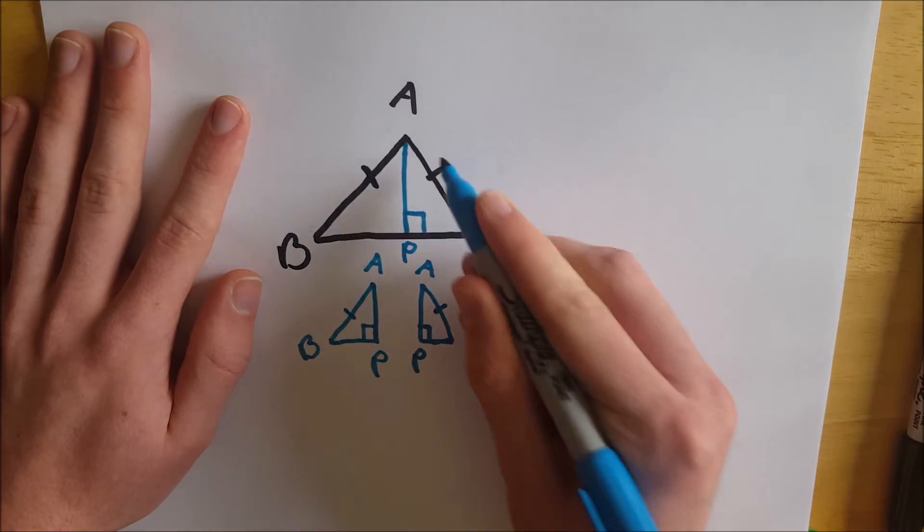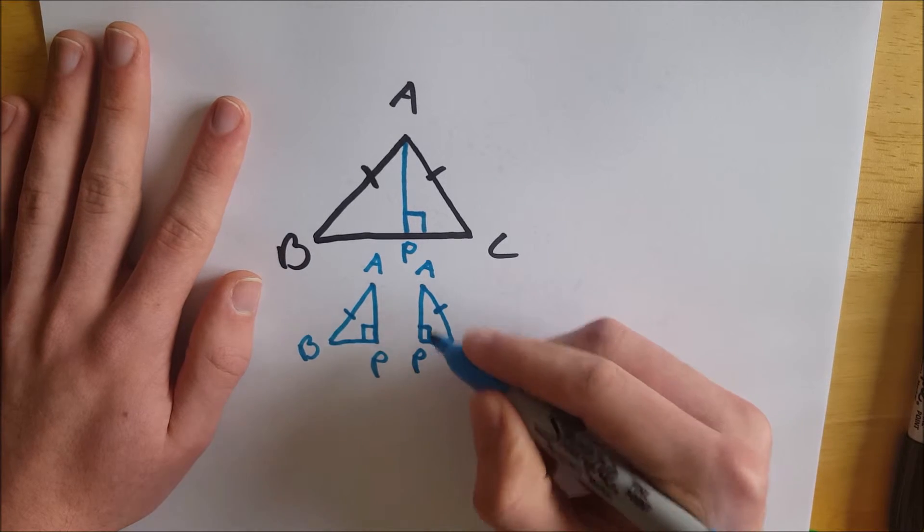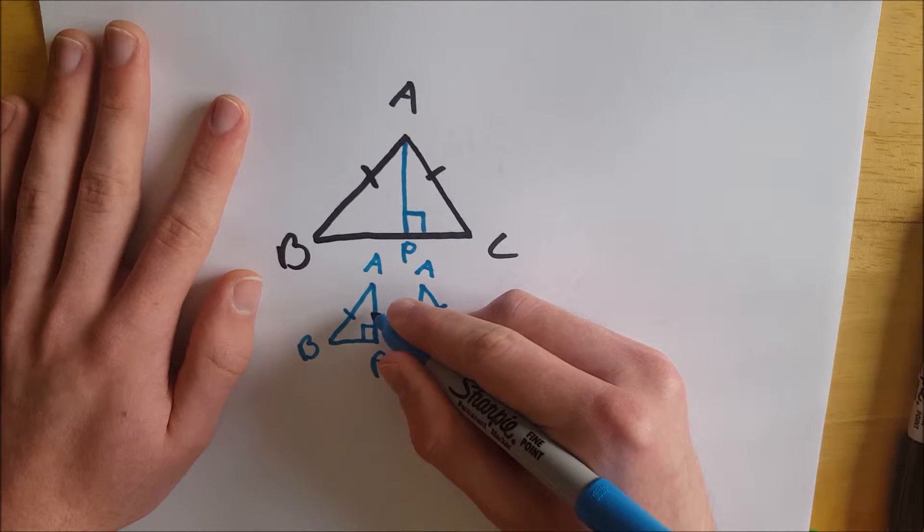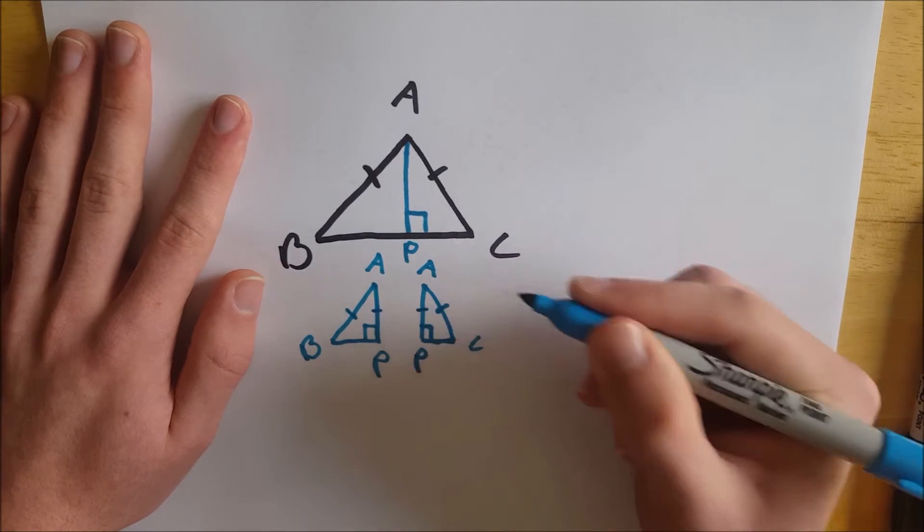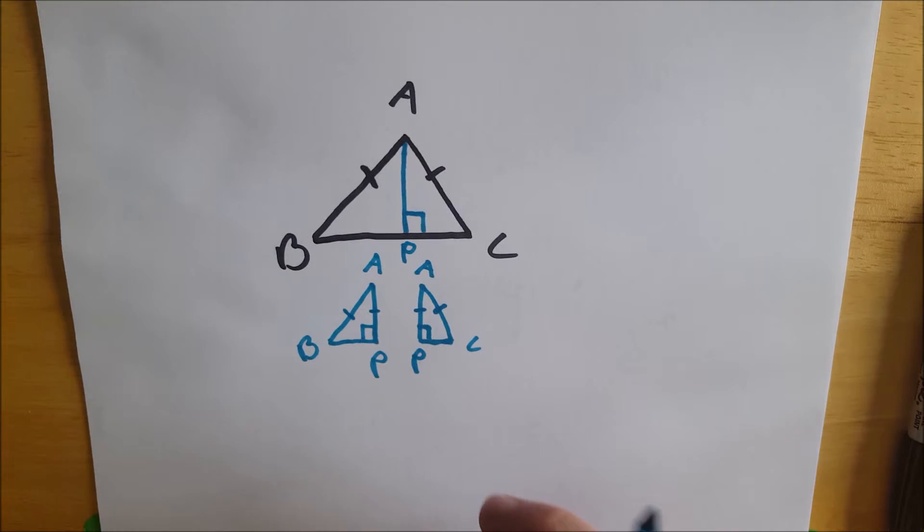And we know that this side right here AP is congruent to this side because this side is AP. So that's the reflexive property, it's congruent to itself and so then just like that we've got the hypotenuse leg theorem for right triangles giving us congruency.